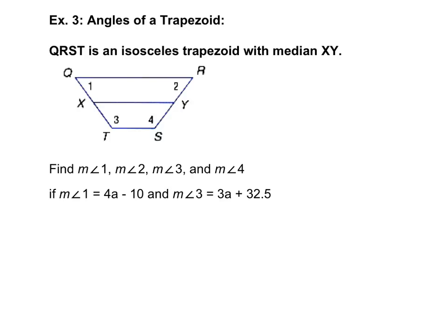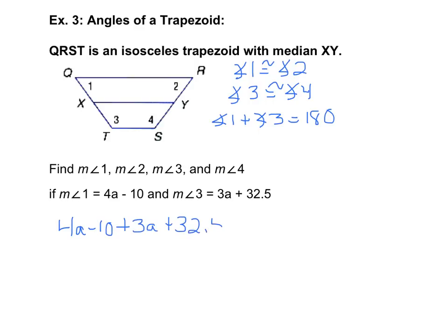So now we still have an isosceles trapezoid. This time we're being asked to find angle measures. So I know that angle 1 and angle 2 have to be congruent because it's isosceles, and so do angle 3 and angle 4. Those are the base angle locations that we talked about on either end of the bases. Not only do I know that, but I know that angle 1 plus angle 3 has to equal 180. That's a supplementary relationship true for any trapezoid. So I'm going to take those measures of 1 and 3 algebraically, and put them together.